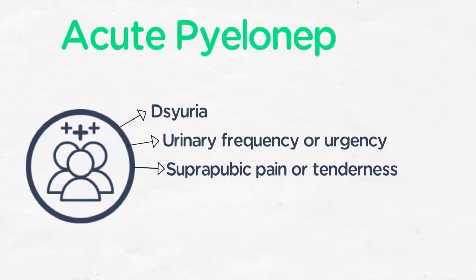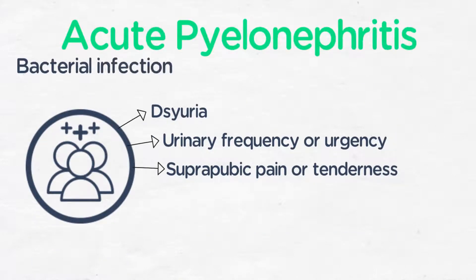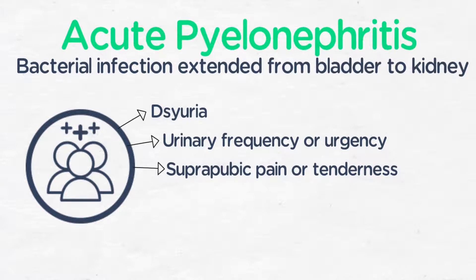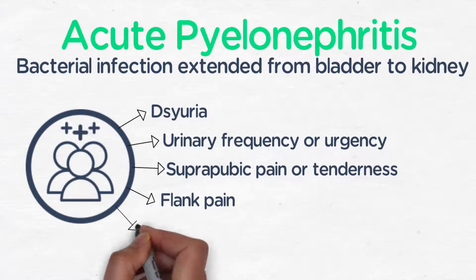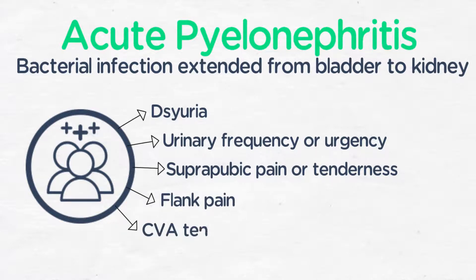Acute pyelonephritis is bacterial infection that has extended from the bladder to the kidney. In addition to the symptoms of UTI, patients with acute pyelonephritis may also demonstrate flank pain, costovertebral angle tenderness, fever, nausea, and vomiting.